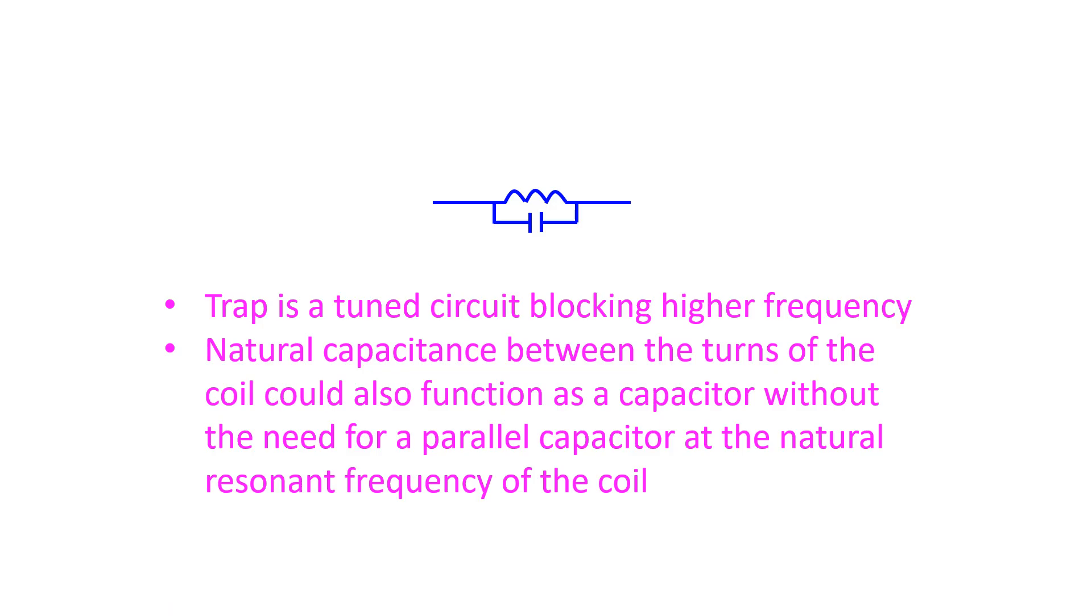Traps, on the other hand, are tuned circuits which will prevent transmission of higher frequency beyond them. For example, if you have an antenna for 40 meter and you keep a tuned circuit in between for 20 meter, the 14 MHz signal will not go beyond the trap, while the 7 MHz signal will travel along the full length of the antenna.